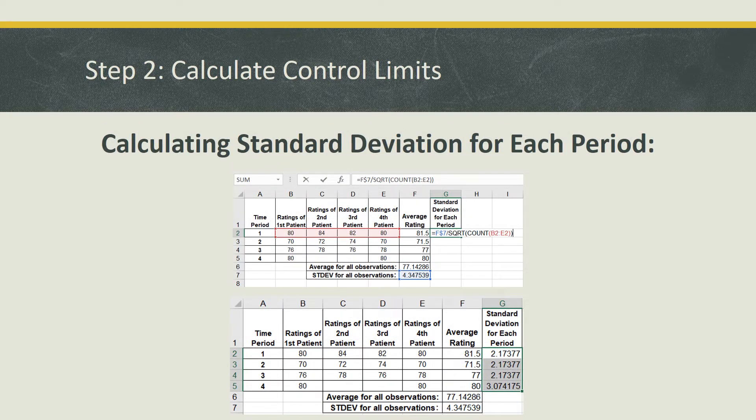Next, we'll calculate the standard deviation, this time for each time period. And to do this, we need to create a new column. We can label it as standard deviation for each period and use the following formula as shown below. That is equals F dollar sign seven, and we use the dollar sign to ensure that this is a fixed cell and it will not change as we go down for each row, over the square root of and then count B2 to E2, which contains all of the values for the ratings for each patient. Once you do this, you can grab the bottom right hand corner like we did before and drag it all the way down to populate each row.